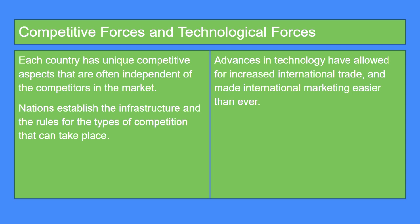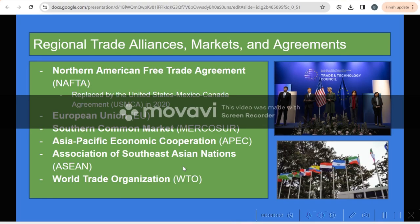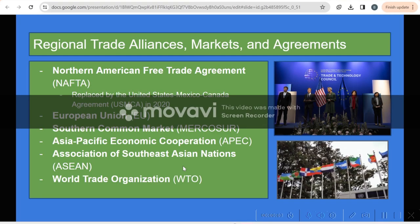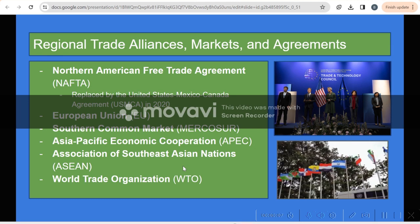Competitive forces and technological forces. Each country has unique competitive aspects that are often independent of the competitors in the market. Nations establish the infrastructure and rules for the types of competition that can take place. Advances in technology have allowed for increased international trade and made international marketing easier than ever. These are examples of alliances, markets, and agreements throughout the world that help promote free trade.